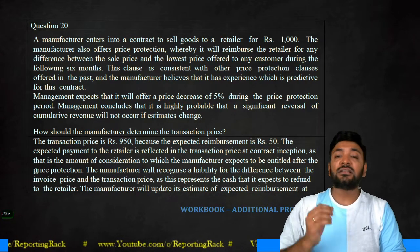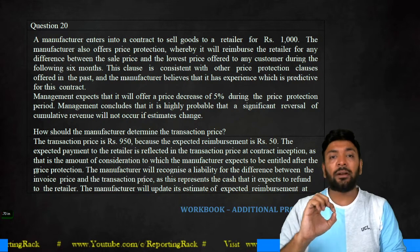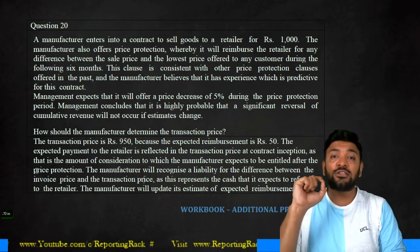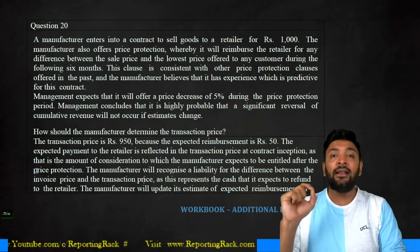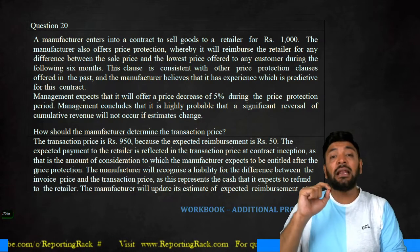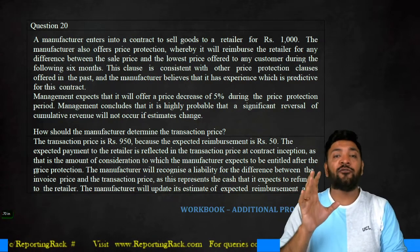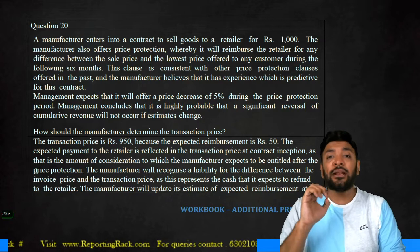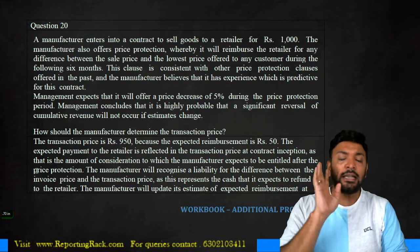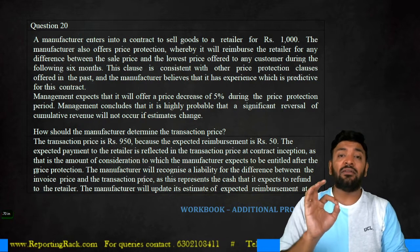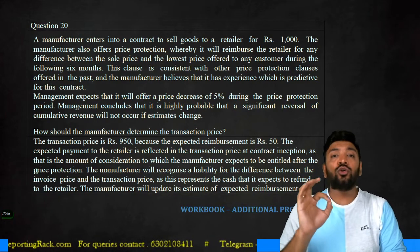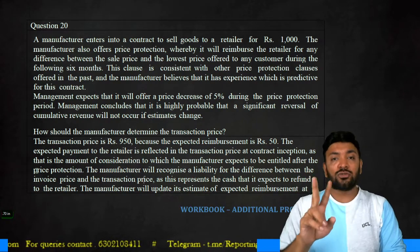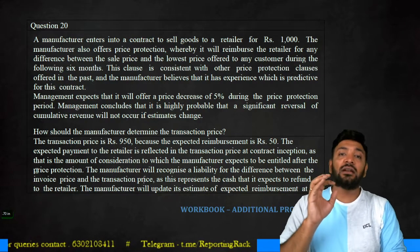The accounting entries: customer account debit to sales — customer will be debited by 1000, to sales revenue recognized only for 950, to liability for rebate 50. This liability for rebate, if adjusted or repaid in future, the entry is liability account debit to bank. If during the 6-month period I have offered only a discount of 20 rupees maximum to any customer, the entry will be liability account debit 50, to cash 20 and balance 30 recognized as sale.